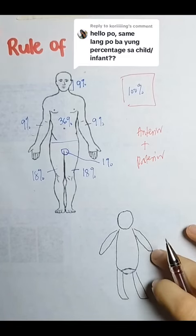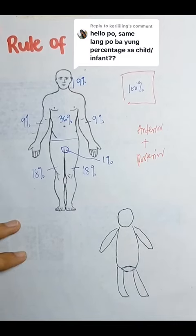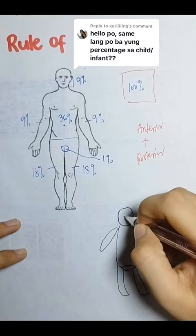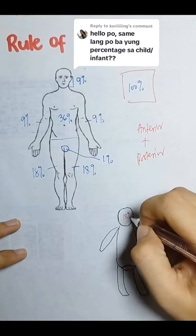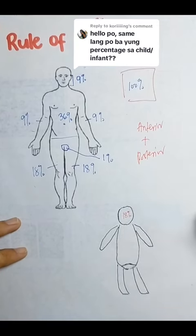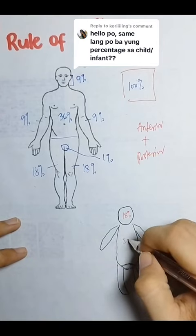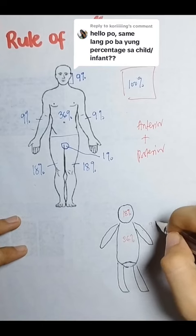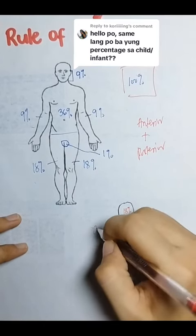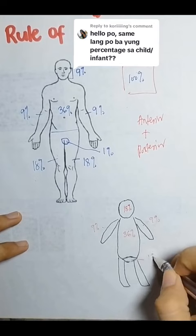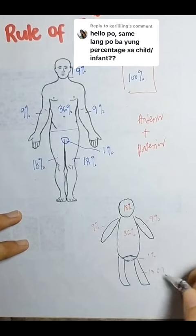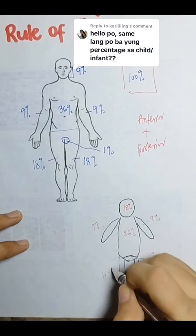Here we have a drawing. So, pasensya naman ang bear ng ating child. So, for children, ang head nila is 18%. Ang body, ang torso ay 36%. Ang arms ay 9%. Perineum, 1%. And ang ating leg ay 13.5%.